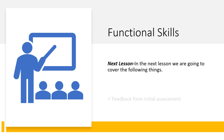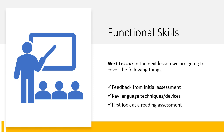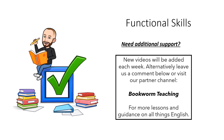In our next lesson, we're going to have some feedback from that initial assessment — things that would have helped people get a high mark, typical things to avoid, and simple things you can use to impress the examiner. We're going to look at key language techniques and devices that will help with both reading and writing. Finally, we'll have a first look at a reading assessment, going through it as a class, nice and slowly. If you need any help, new videos will be added every single week, or you can leave a comment below or visit our partner channel Bookworm Teaching. Thanks ever so much for listening, and all the best with your work and revision. Bye bye.